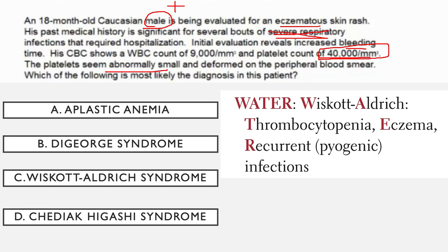You might also see petechiae on his skin, plus eczema, plus recurring infections because there is also a cytoskeletal defect in his leukocytes. This triad is what you need to spot in the question. The eczema is a giveaway because it's not seen in many conditions, and the fact that this baby is male tells you this condition is X-linked. There are only a few X-linked immunodeficiency conditions: agammaglobulinemia, Wiskott-Aldrich, and one form of SCID. There are lots of clues pointing to Wiskott-Aldrich here.